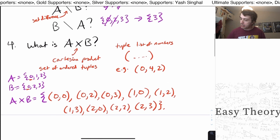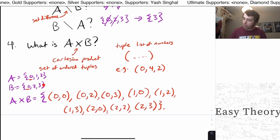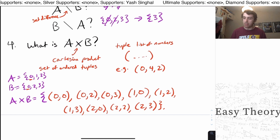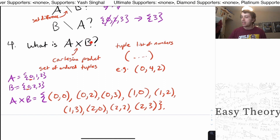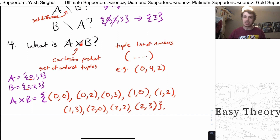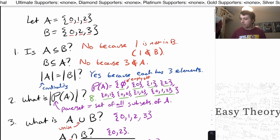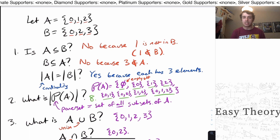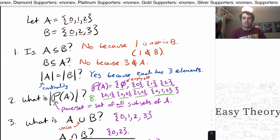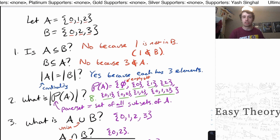So the Cartesian product with 3 things in A and 3 things in B will always have 9 elements. Can you determine the number of elements in the Cartesian product if you know the sizes of A and B? Leave a comment below if you found these answers a different way. Please subscribe, and check the link in the description for my Discord server and other social media. I'll see you next time.